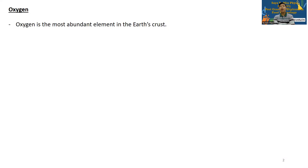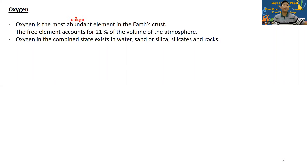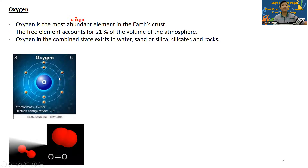Oxygen is the most abundant element. The free element forms 21% of the volume of the atmosphere. It is not available in pure form naturally in large quantities on its own.